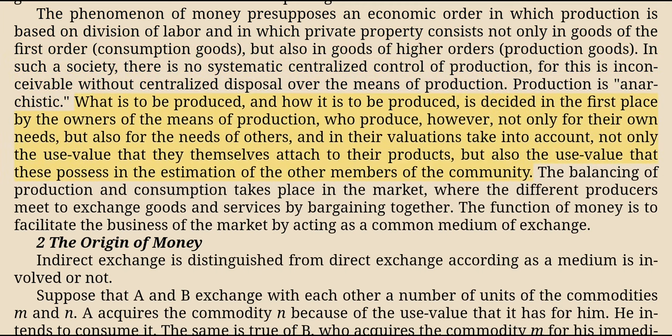What is to be produced, and how it is to be produced, is decided in the first place by the owners of the means of production, who produce, however, not only for their own needs, but also for the needs of others, and in their valuations take into account not only the use value that they themselves attach to their products, but also the use value that these possess in the estimation of the other members of the community. The balancing of production and consumption takes place in the market, where the different producers meet to exchange goods and services by bargaining together. The function of money is to facilitate the business of the market by acting as a common medium of exchange.